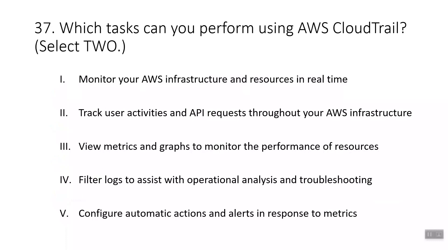Question thirty-seven: which tasks can you perform using AWS CloudTrail? Select two. The correct answers are tracking user activities and API requests throughout your AWS infrastructure, and filtering logs to assist with operational analysis and troubleshooting. Monitoring AWS infrastructure in real time, using metrics and graphs to monitor performance, and configuring automatic alerts in response to metrics are tasks performed in Amazon CloudWatch.